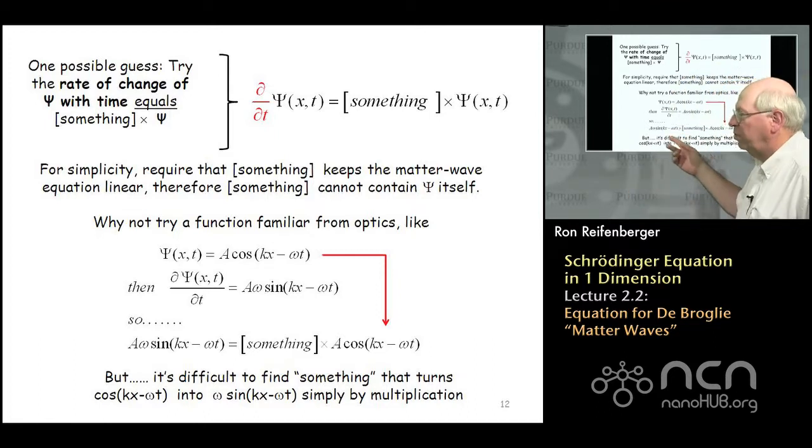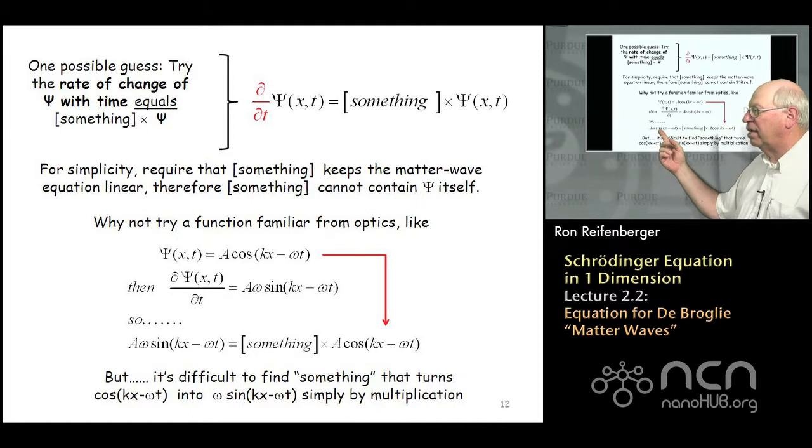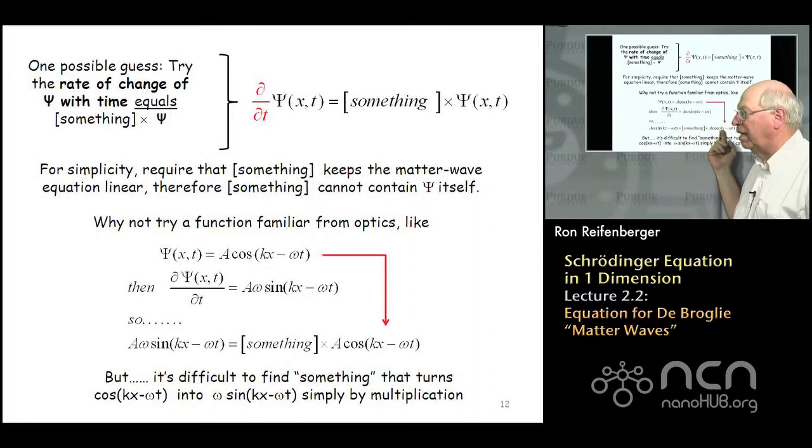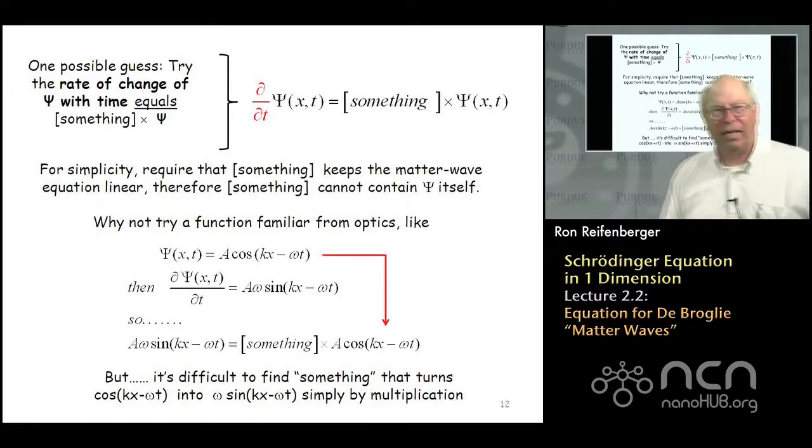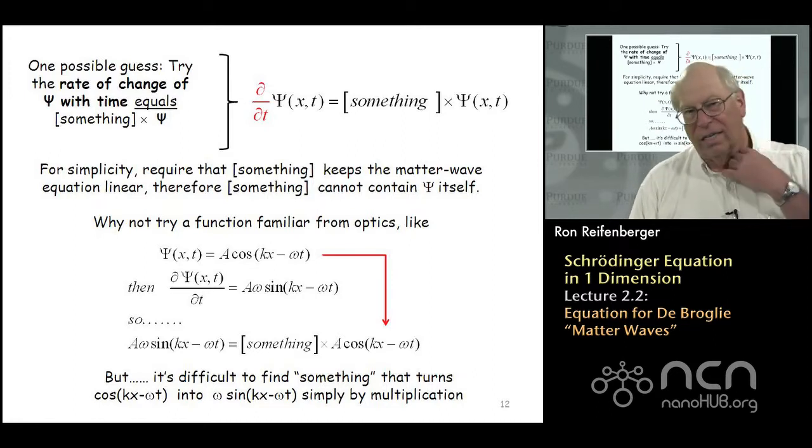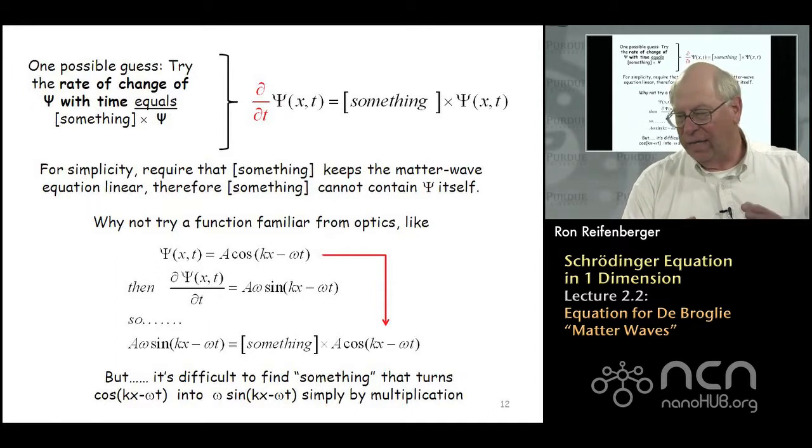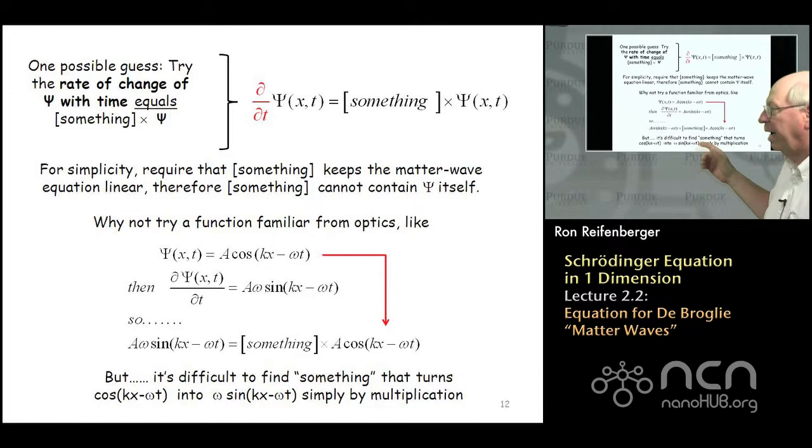And this cosine function is then going to be used in this hypothetical equation to see if we can actually solve it. Well, if you work through the arithmetic, what you'll find is that when you take the derivative of ψ with respect to t, the cosine gets turned into a sine. And then the question is, is the derivative of ψ with respect to t equal to something times the function itself, a cosine of kx - ωt? And the answer is no, it's not.